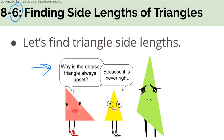Why is the obtuse triangle always upset? Because it is never right. Ha ha. We are going to be seeing different types of triangles as we go on here.